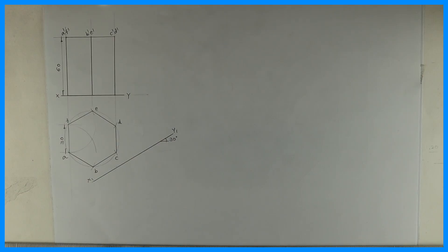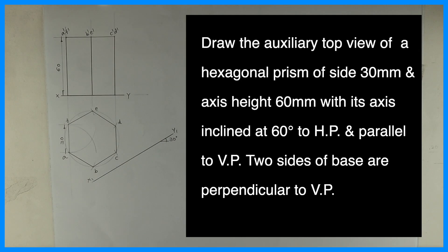Welcome to technical drawing. Today we are going to draw this sum: draw the auxiliary top view of a hexagonal prism of side 30mm and axis height 60mm, with its axis inclined at 60 degrees to HP and parallel to VP. Two sides of the base are perpendicular to VP.